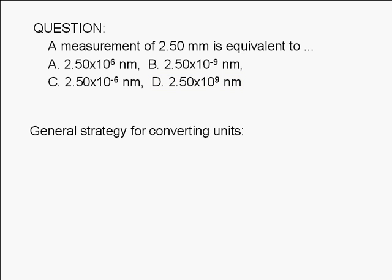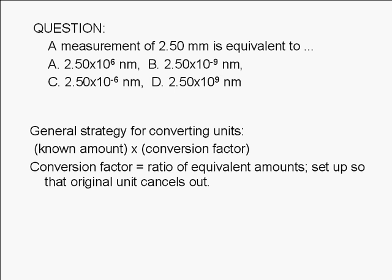The general strategy for converting units is to multiply the known amount by a conversion factor. The conversion factor is just the ratio of equivalent amounts. We need to set up the conversion factor so that the original unit cancels out.